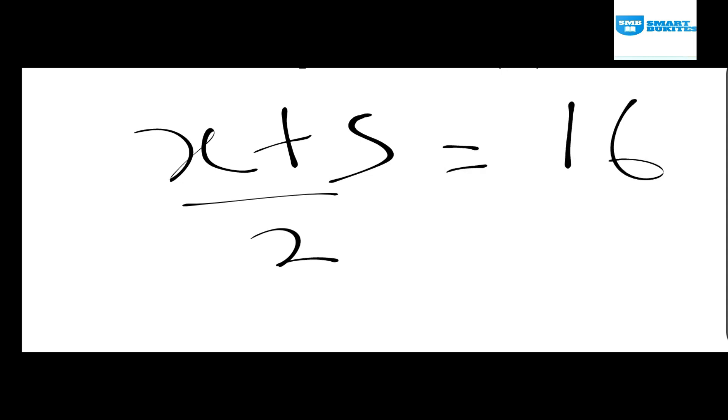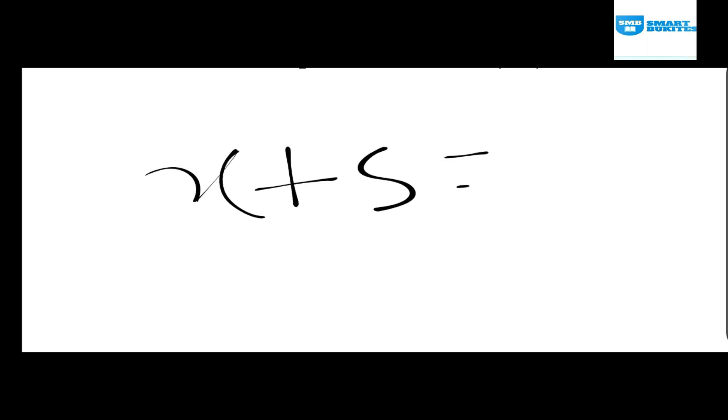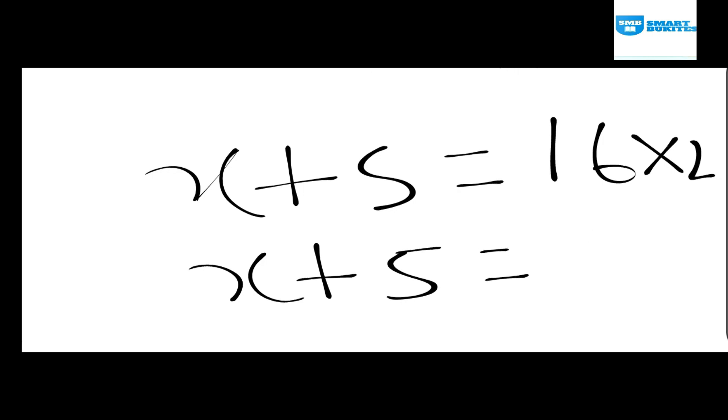You know the condition if you find it like this, then we say cross multiply which we say like this, which becomes x plus 5 is equal to 16 times 2 and x plus 5 is equal to 32.